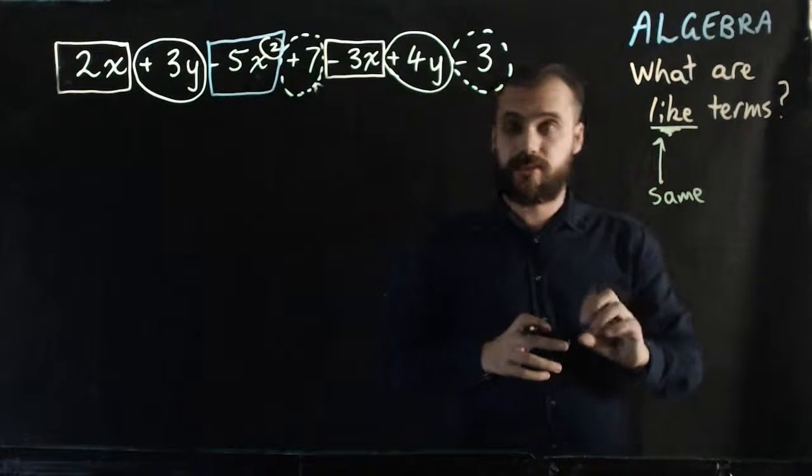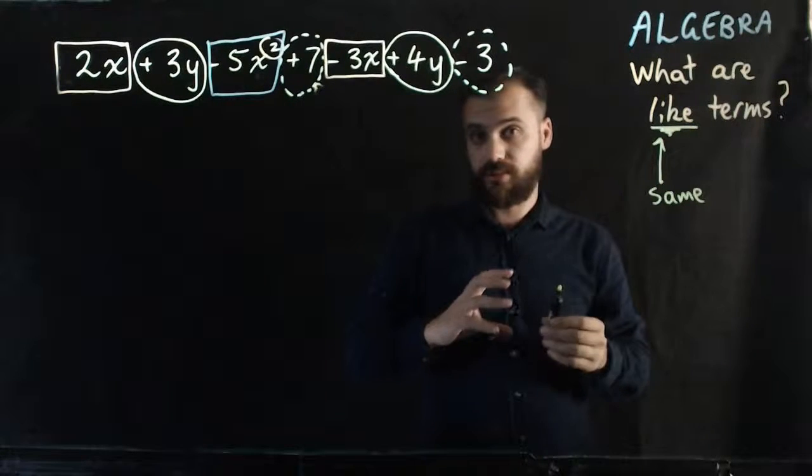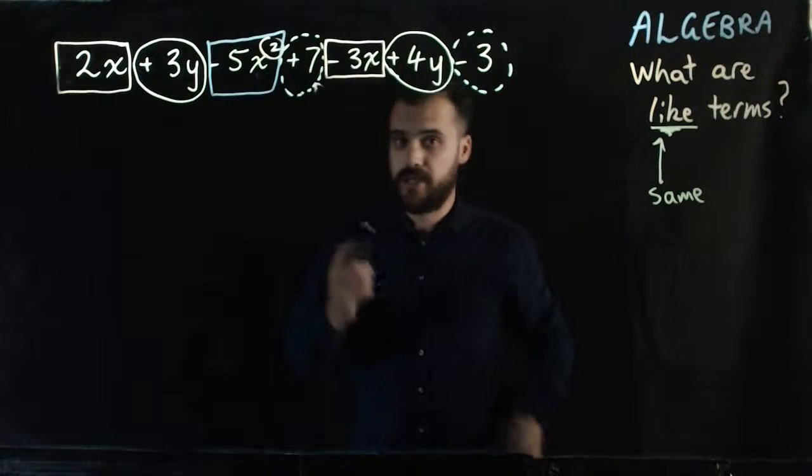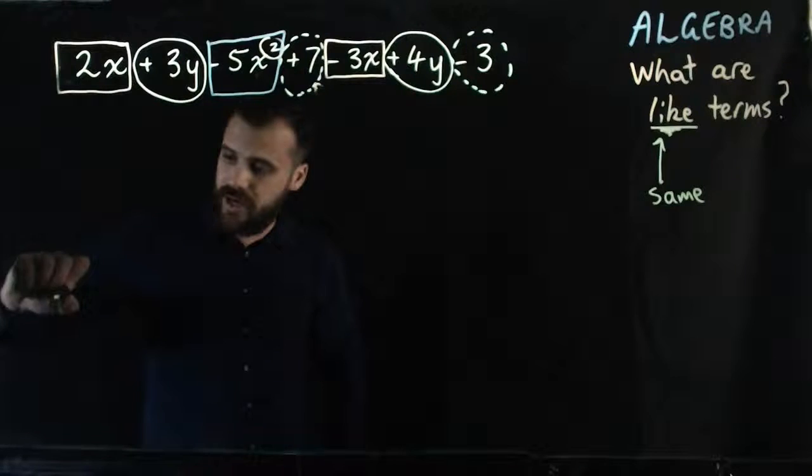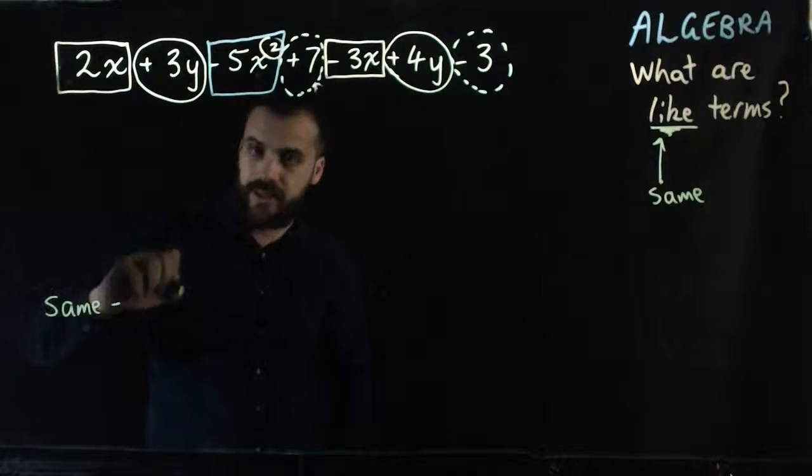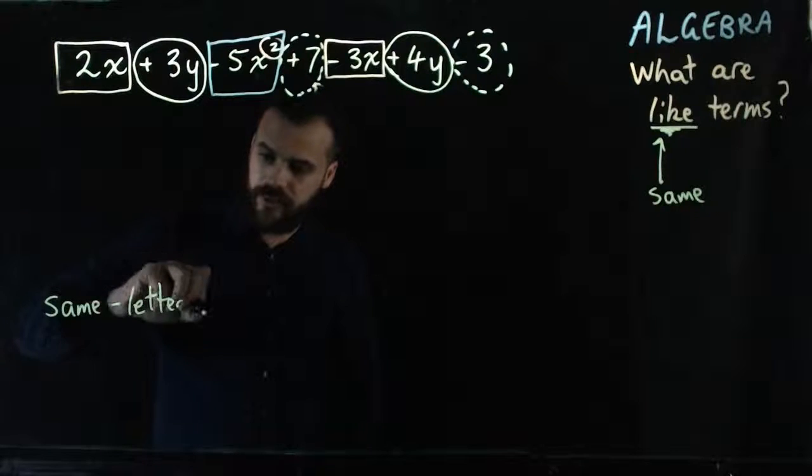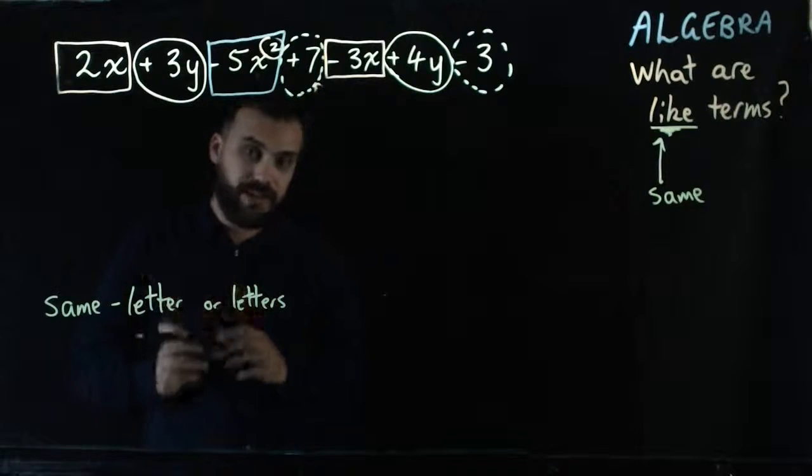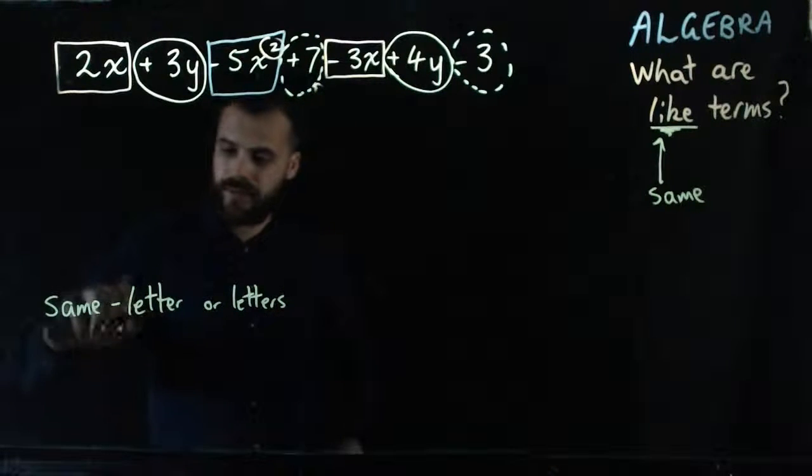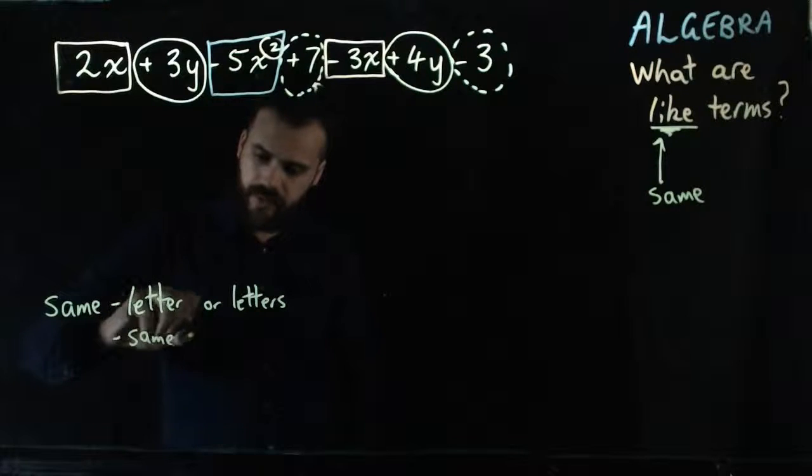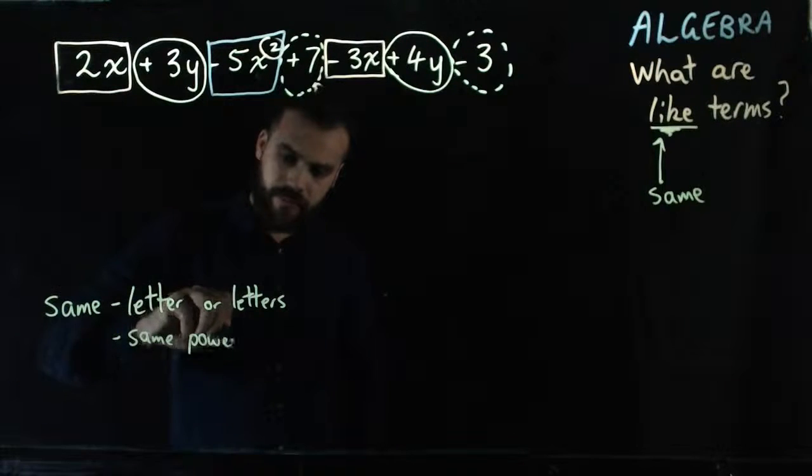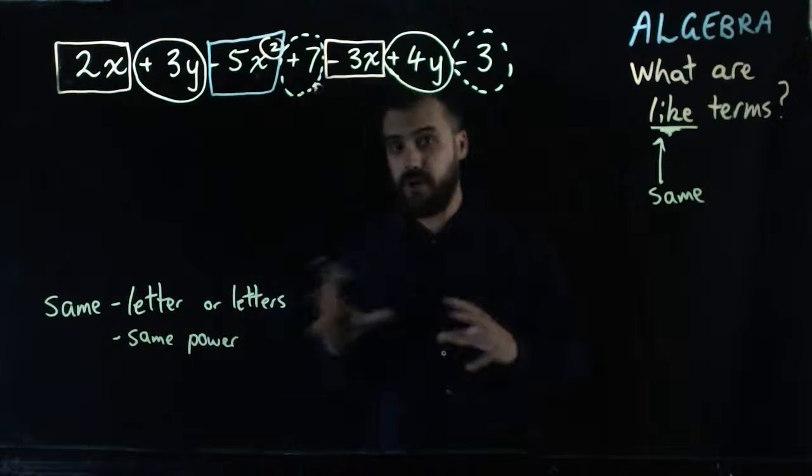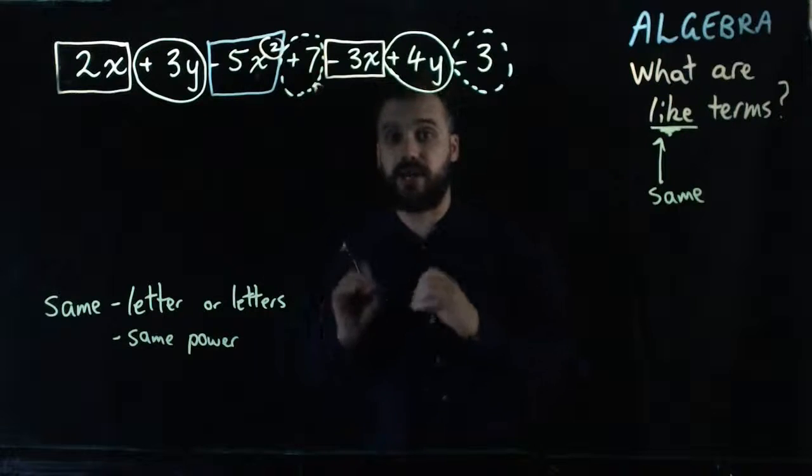What are like terms? Now, like terms, it's very simple to figure out whether something is a like term or not. To be a like term, you have to have the same letter or letters, and the same power. Same power. That's it. Once you know that, you can figure out whether things are like terms or not.